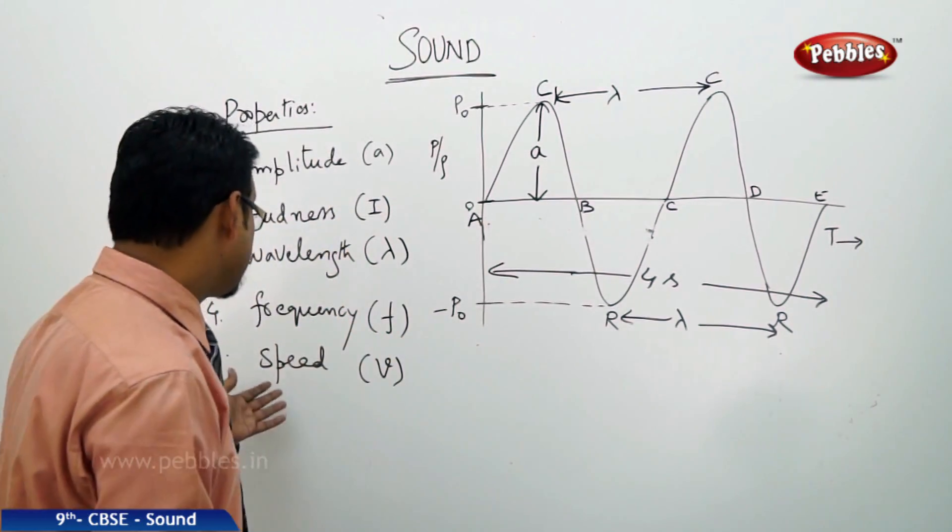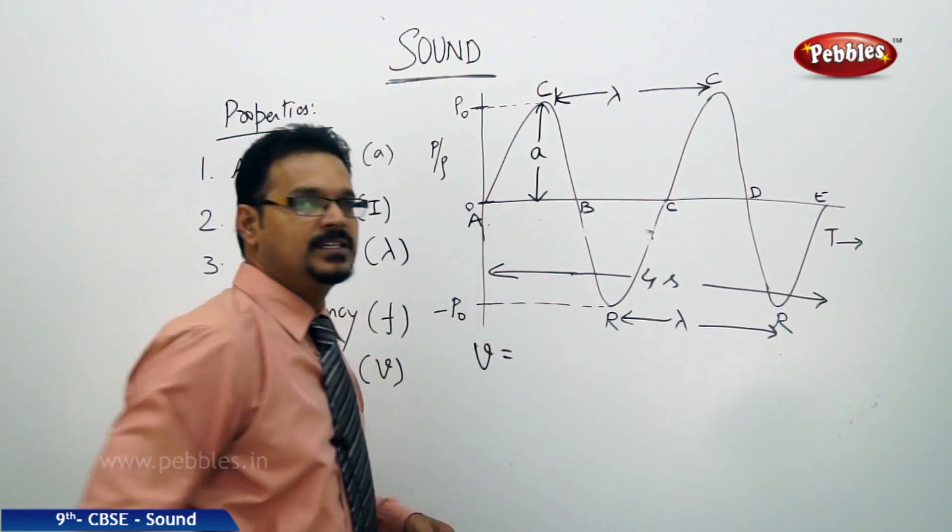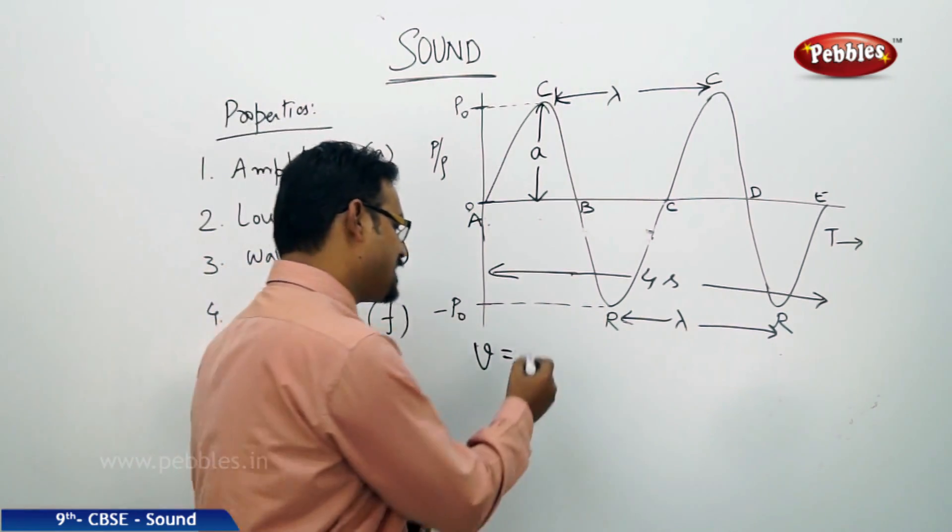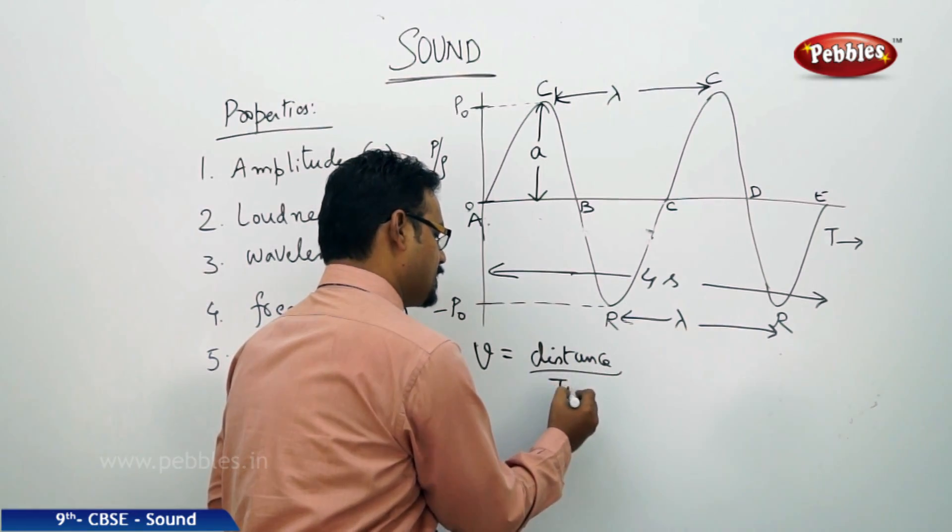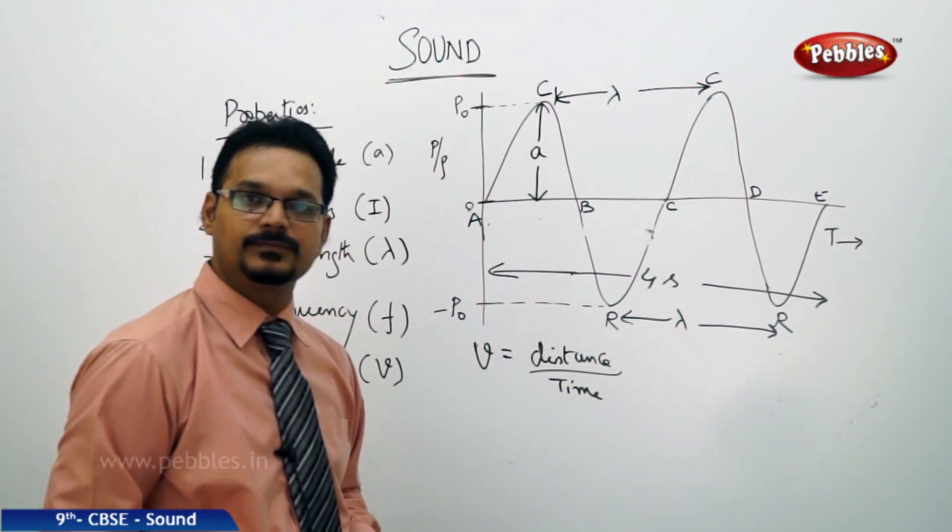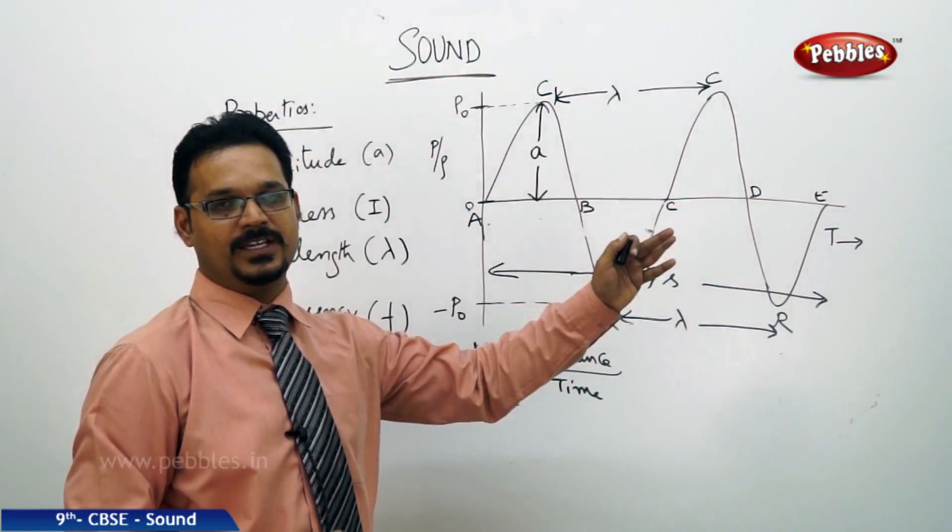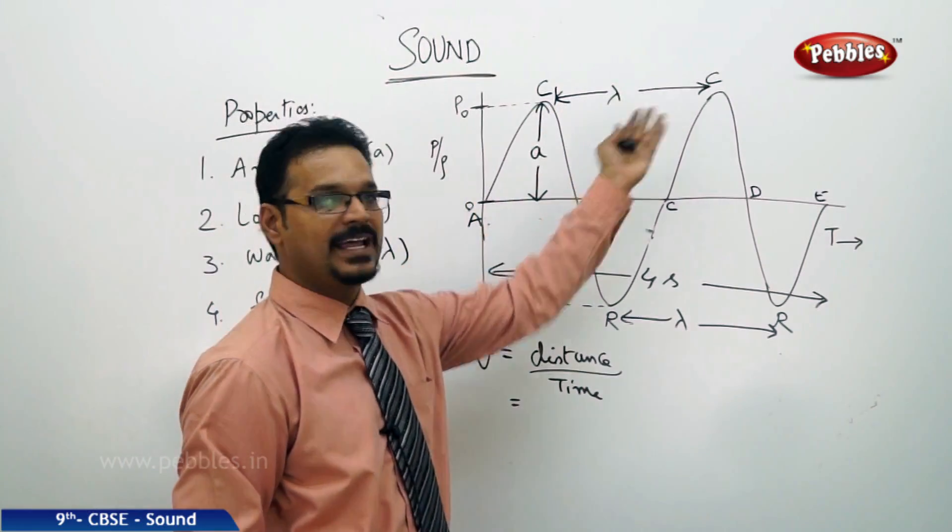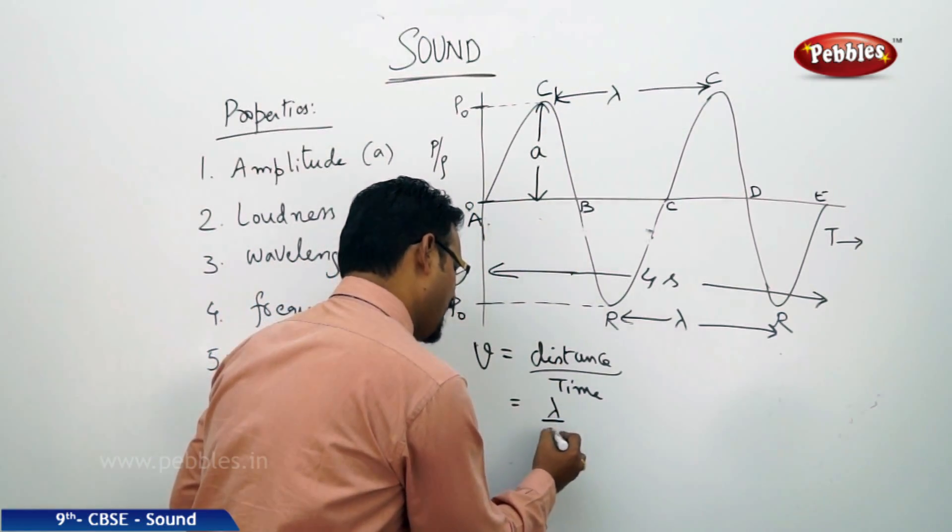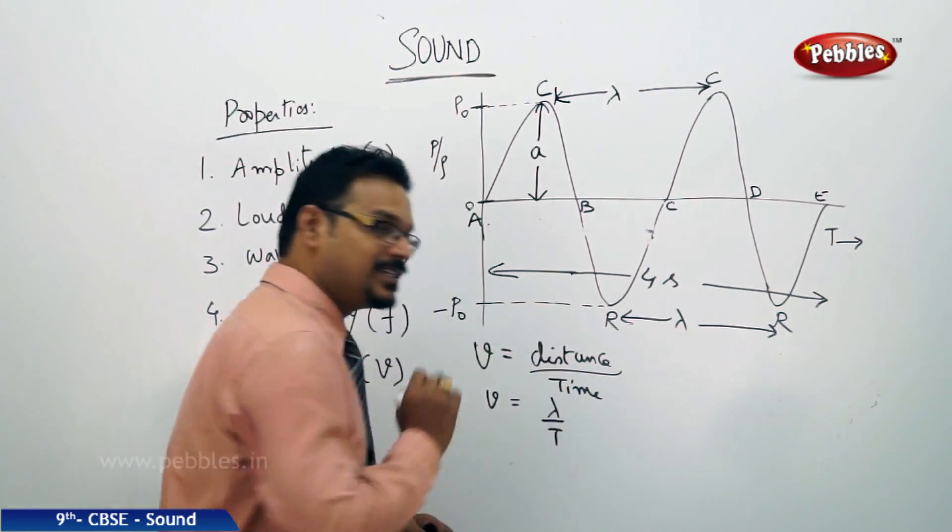Now, the last property, speed. In motion chapter, we discuss the definition of speed. Speed is distance by time. It is distance by time. So, here, the distance is nothing but the wave travel distance. The wave travel distance in one second. And the travel distance is lambda. So, I can write lambda. By time is T. Capital T. Capital is a time period. Now, V is lambda by T.